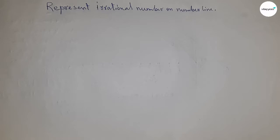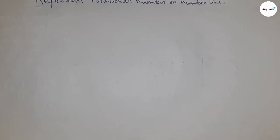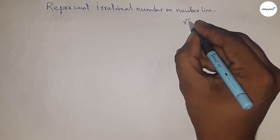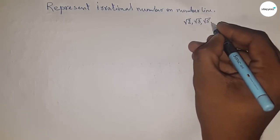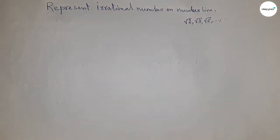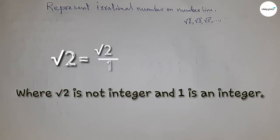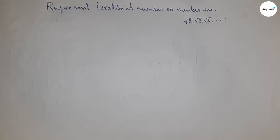That means q is not equal to zero. Now taking some examples of irrational numbers: square root of 2, square root of 3, and square root of 5, and so on. If we try to express root 2 in the form p by q — root 2 equals root 2 by 1 — here 1 is an integer but root 2 is not an integer, so root 2 by 1 is not a rational number. We cannot express this type of number in the form of p by q.